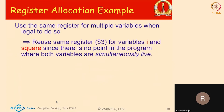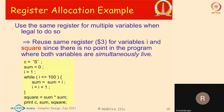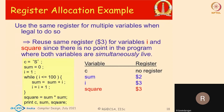We use the same register for variable i and square since there is no point in the program where both are simultaneously live. So we allocate register 2 to sum and register 3 to i, with square sharing that same register. Variable c will reside in memory and is not allocated a register, because we have assumed there are only two registers.